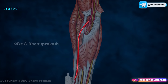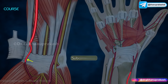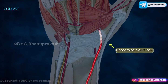It first lies beneath the brachioradialis. Near the wrist it is subcutaneous and lies on the anterior surface of the lower part of the radius. Then it winds around the lateral side of the wrist to reach the anatomical snuff box on the posterior aspect of the hand.